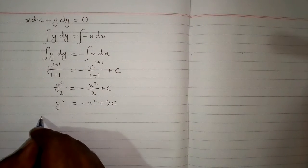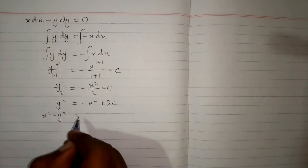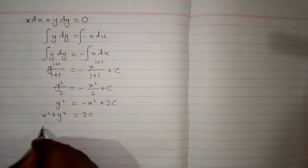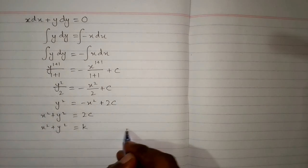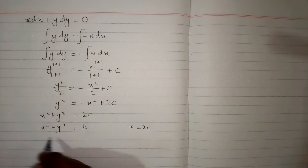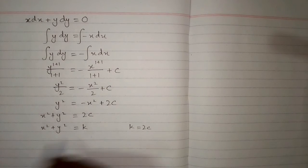And this can be written as x square plus y square is equal to 2c. And if we replace 2c by k, so we have x square plus y square is equal to k.